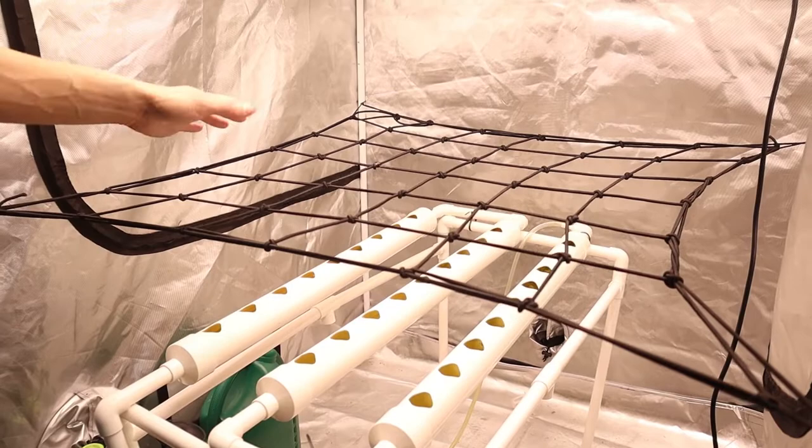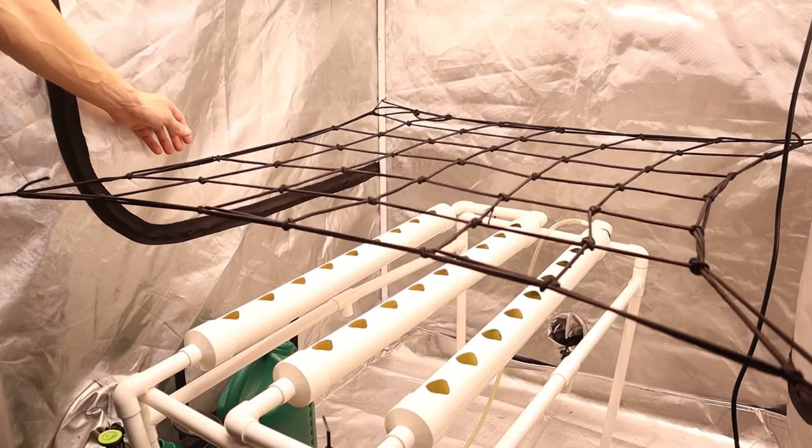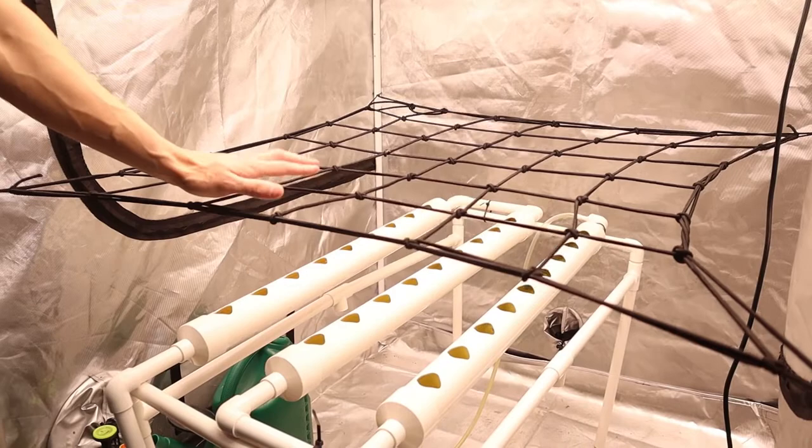We've just taken that same trellis net and set this up in our 1.2 meter by 1.2 meter display tent here which has a little hydro system in the bottom. As you can see it is a really good fit for this tent. While it might not go right out to the edges you're still going to get plenty of support from the plants leaning to the inside of it.